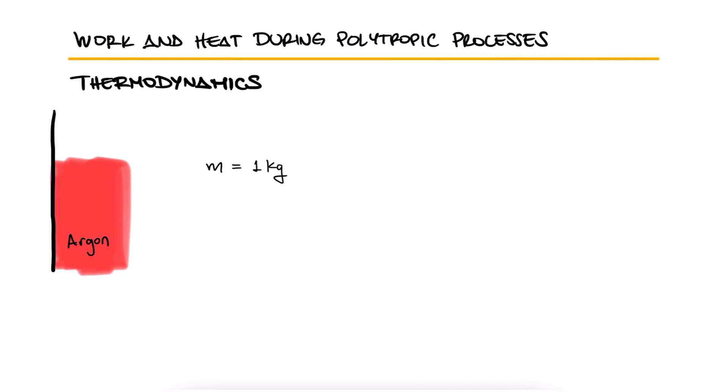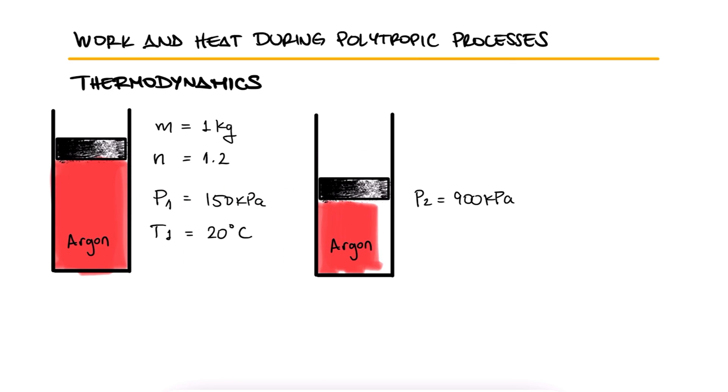1 kg of argon is compressed in a polytropic process with a polytropic index of 1.2 from 150 kPa and 20 degrees Celsius to 900 kPa in a piston cylinder device. Determine the work produced and heat transferred during this compression process.